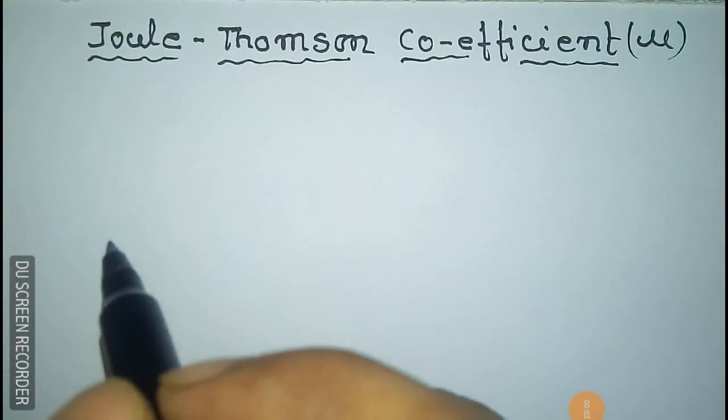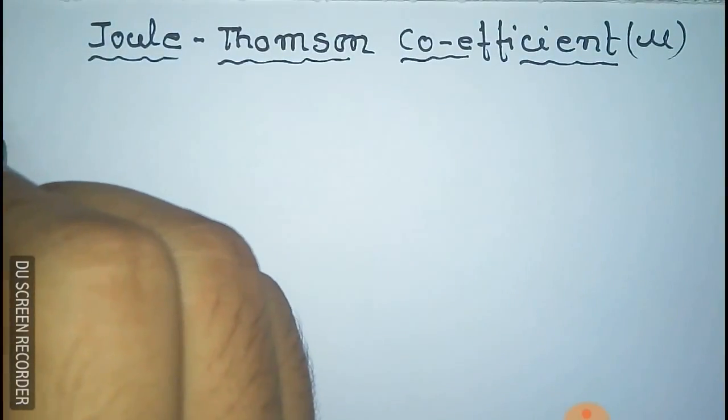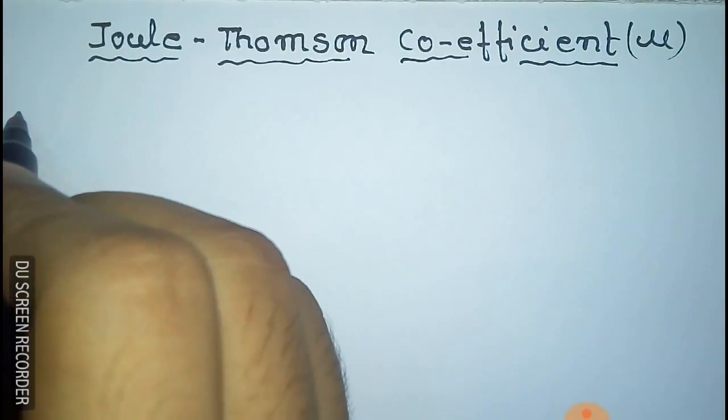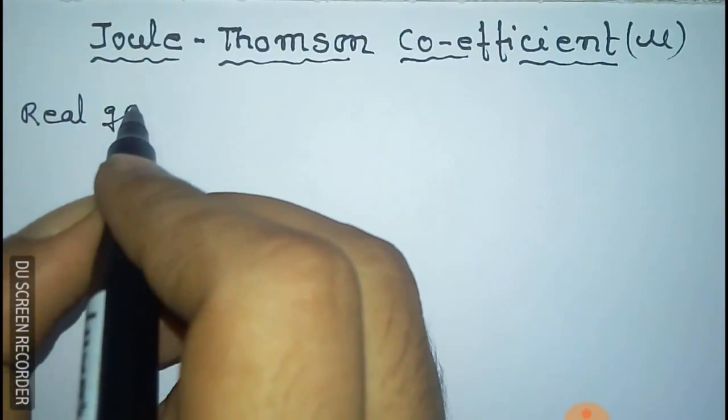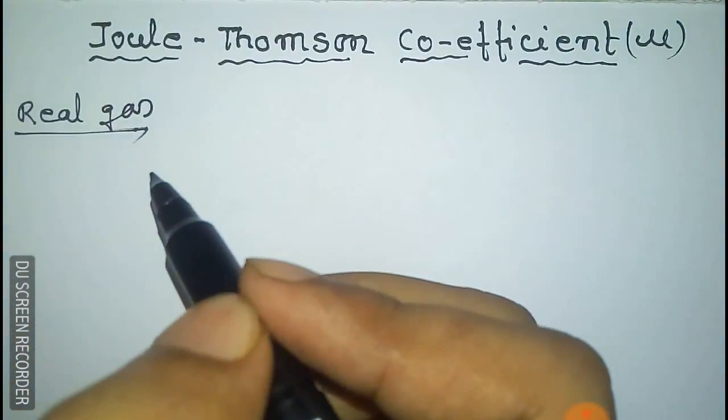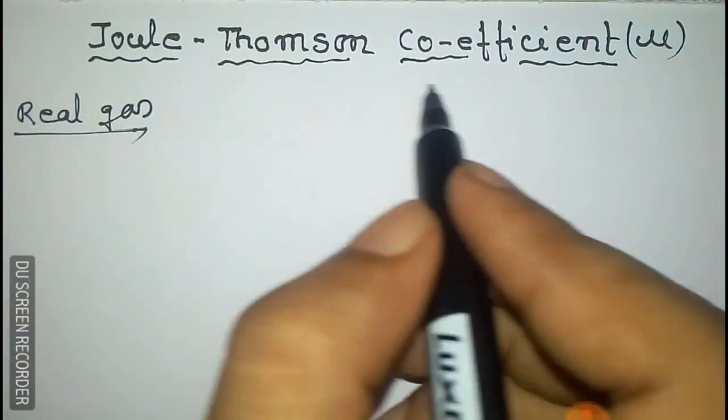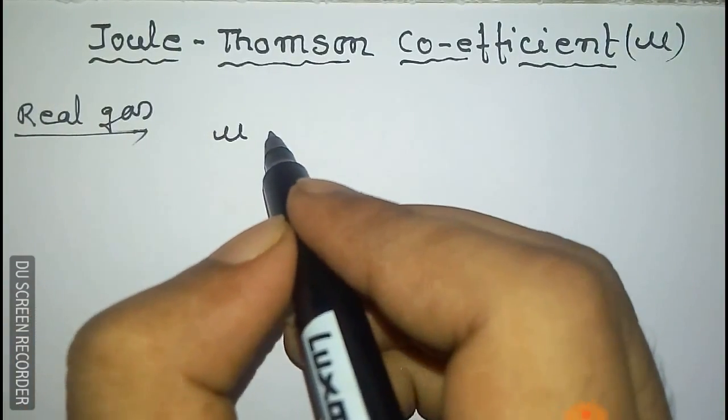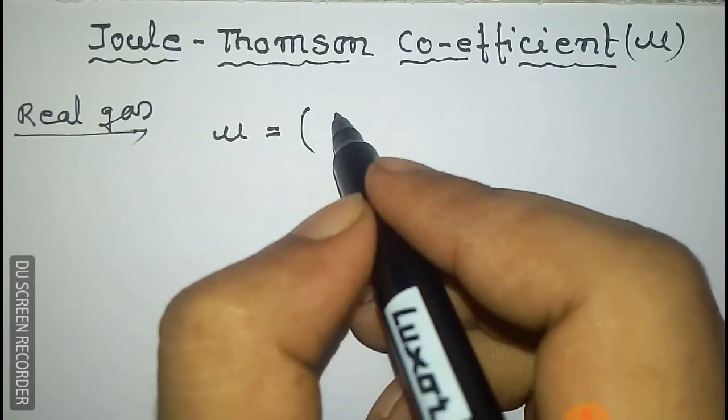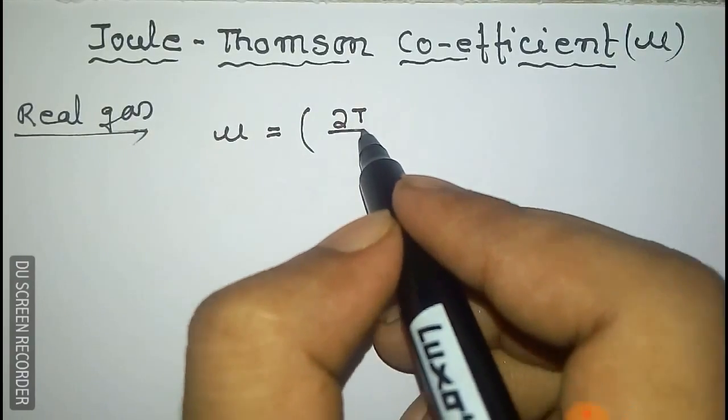We have to derive the Joule-Thompson coefficient mu for real gas and ideal gas. First, we take the real gas. Mu, the coefficient, is the change of temperature with pressure at constant enthalpy: del T del P at constant enthalpy H.